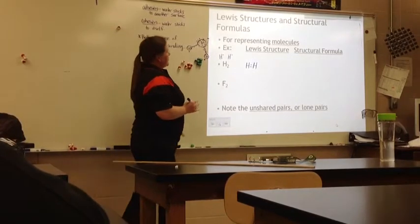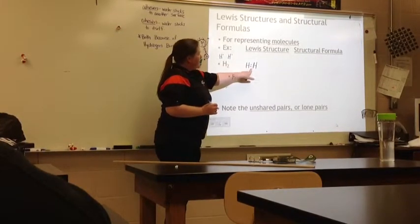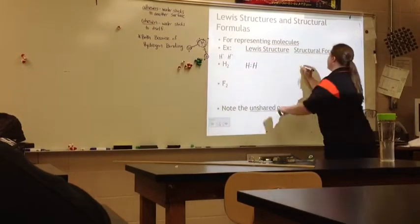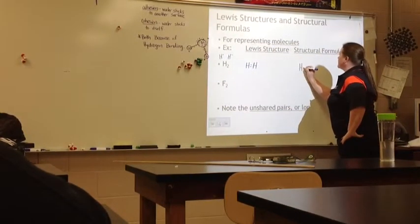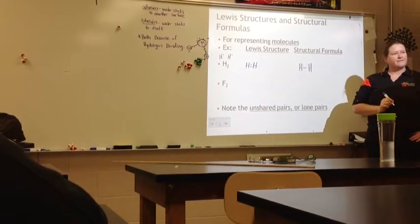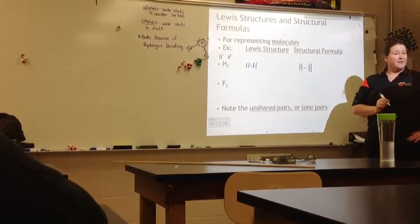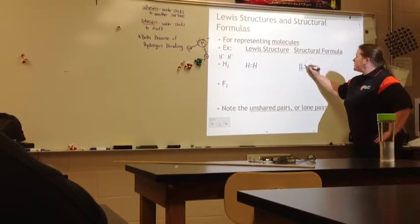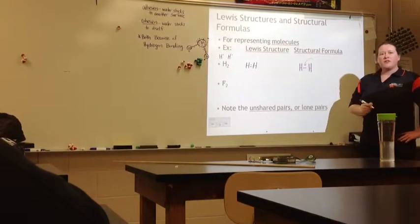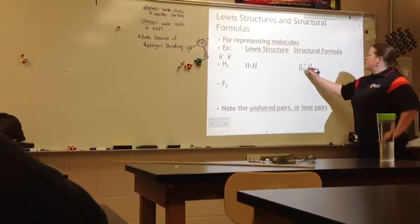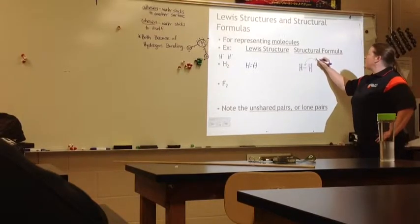So a Lewis structure looks like that. The shared pair is written in between the two element symbols. A structural formula looks like this. Very similar, with one difference. This dash, in chemistry, when we draw structures, represents a shared pair of electrons.